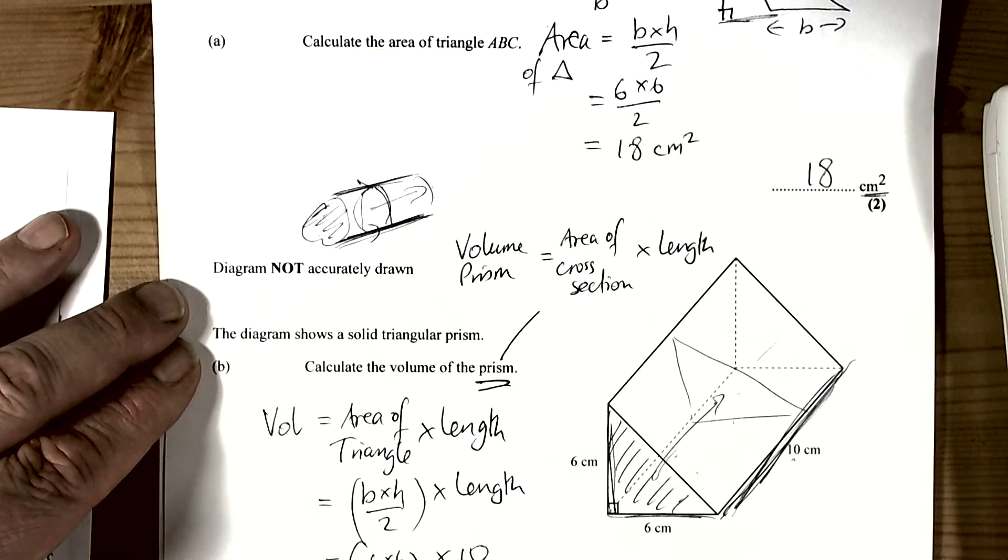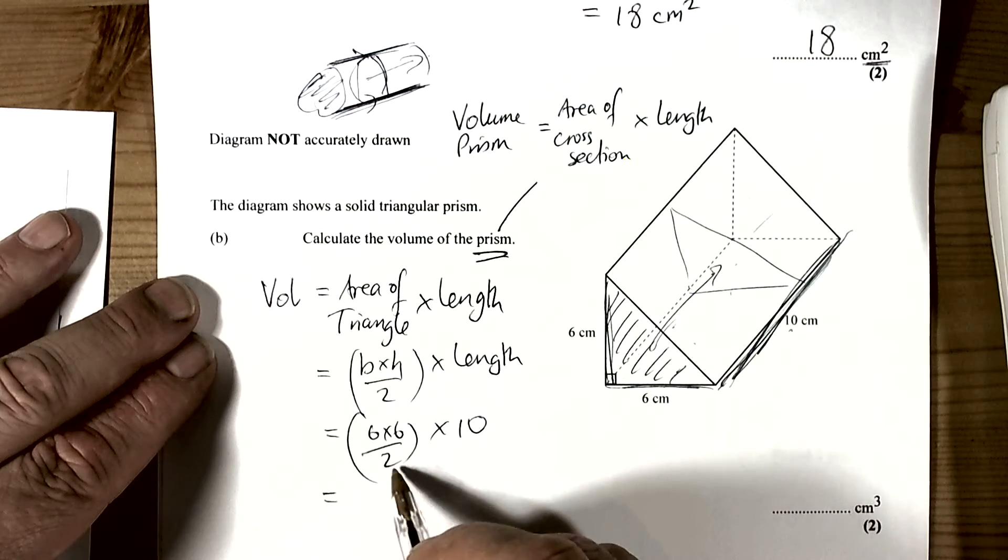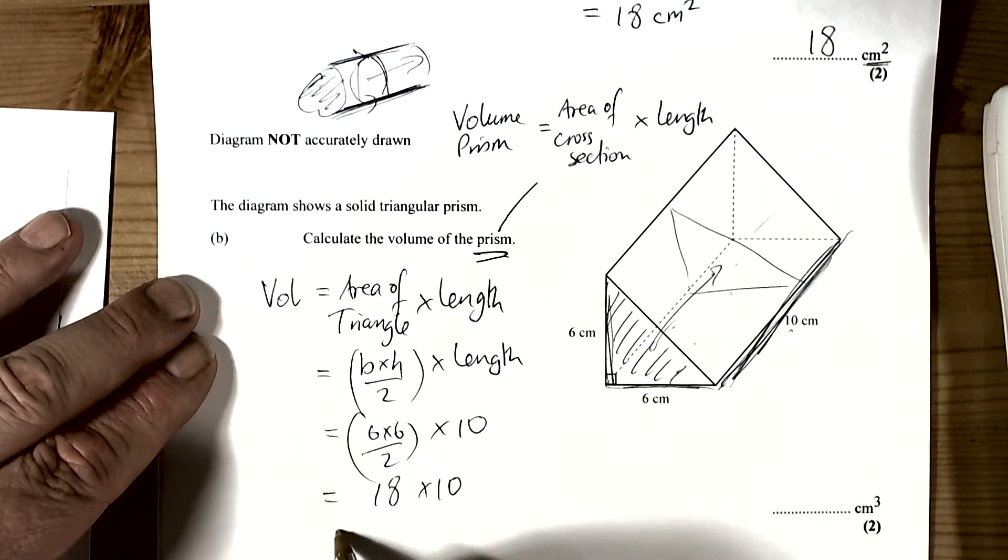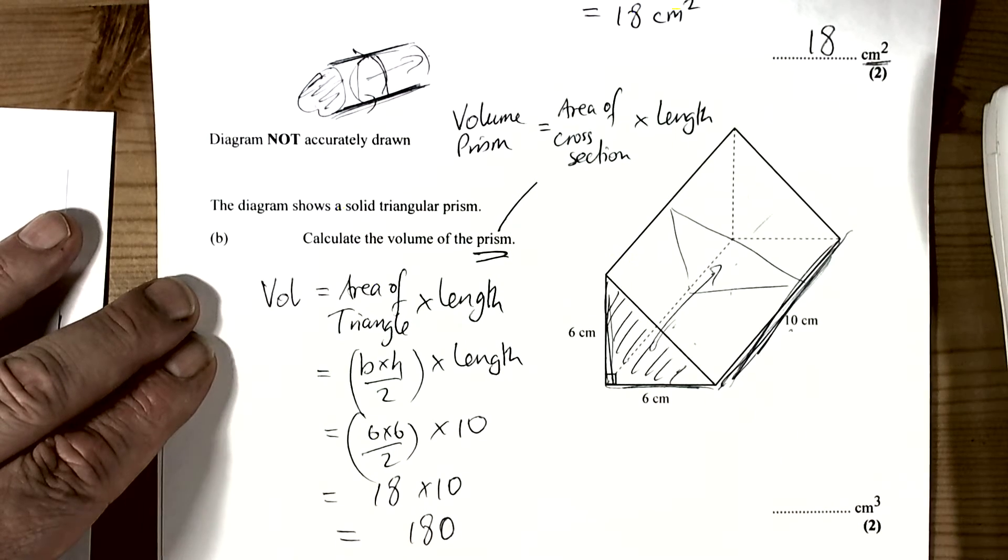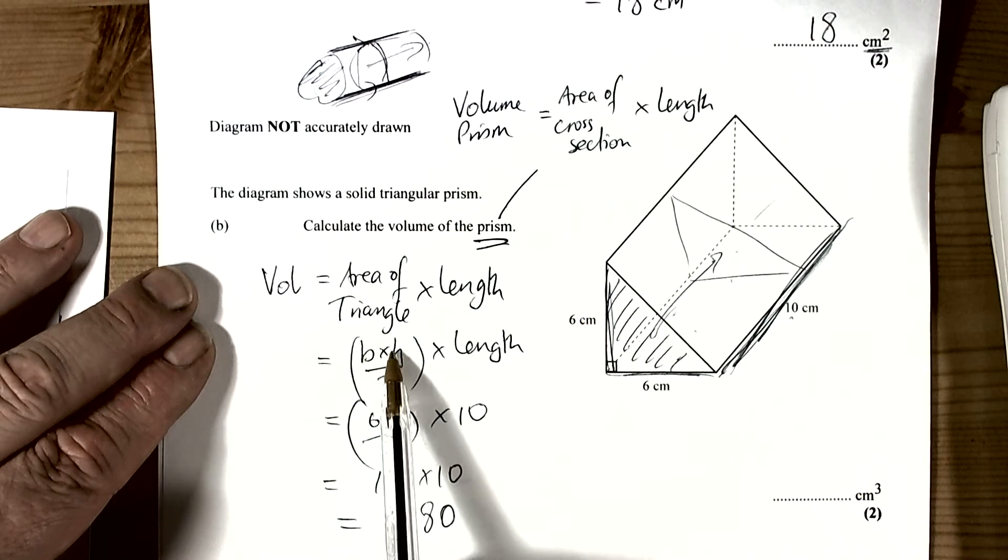So 6 times 6 divided by 2 times 10. Now we already worked out that 6 times 6 divided by 2 is 18, and we're multiplying by 10, so we get 180. Now we've got to remember that in this case we multiplied three lengths together: a base, a height, and a length.